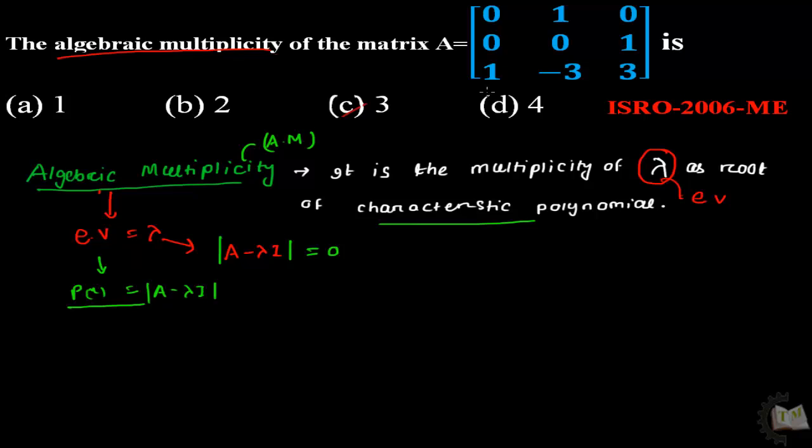Let me solve this question. First find out the characteristic equation of this matrix. Simply write the characteristic equation: determinant of minus lambda, 1, 0; 0, minus lambda, 1; 1, minus 3, 3 minus lambda equals 0.